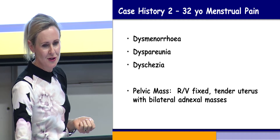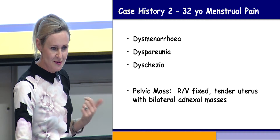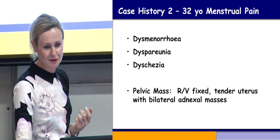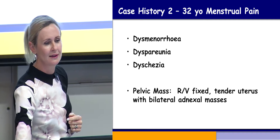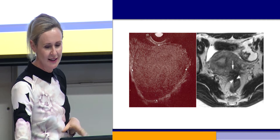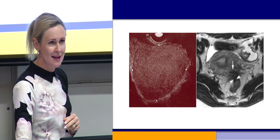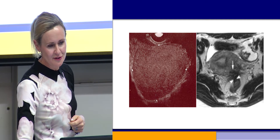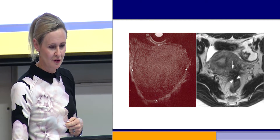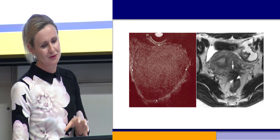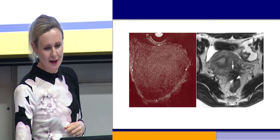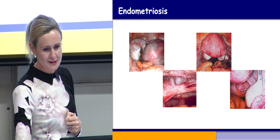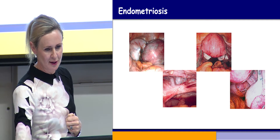A 32-year-old with menstrual pain had classic symptoms of dysmenorrhea, dyspareunia, and dyschezia. On examination she had a retroverted fixed tender uterus with bilateral adnexal masses — classic presentation for endometriosis. Not urgent, but patients can perceive it as urgent because they can be in a lot of pain. Imaging showed a classic endometrioma — a blood-filled chocolate cyst. On MRI there was involvement of the rectum and uterosacral ligaments. And these are pictures at laparoscopy of endometriosis involving the pelvis.